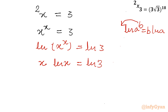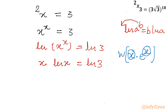This is not yet in the standard form for the Lambert W function. The standard form requires one function in product with e raised to the same power — the multiplier and the exponent must match. I rewrite x as e^(ln x), so the equation becomes: ln(x) · e^(ln x) = ln 3.